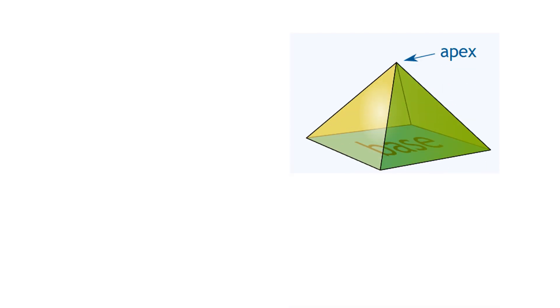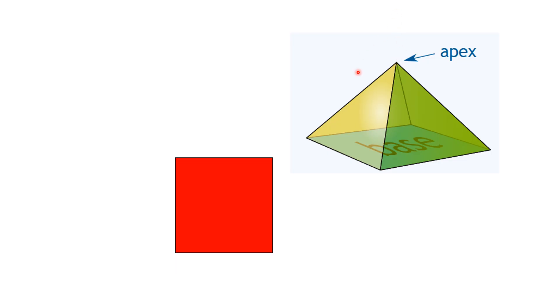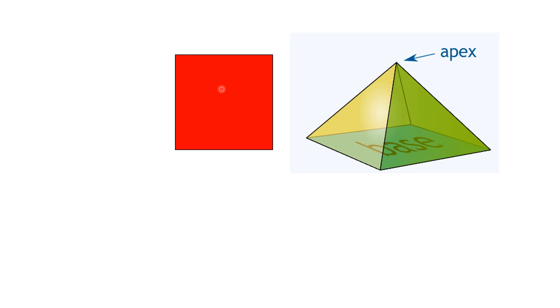Alright, so this is an example of a pyramid. At the bottom, ito po yung tinatawag natin na base and this one we call the apex. This one is a square. So this square is referring to our base, yung ilalim po ng ating pyramid. And another is a rectangle, yung rectangular base. So this is a rectangular pyramid. Yung base niya po is rectangle, and this one is square.